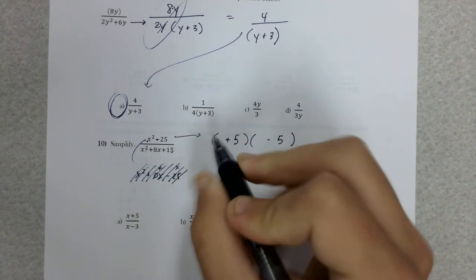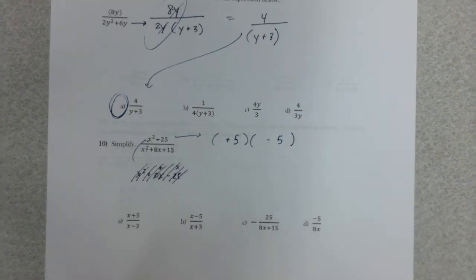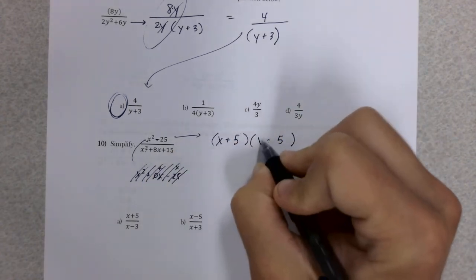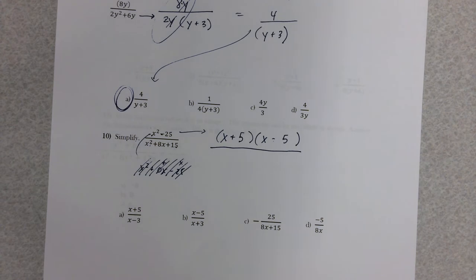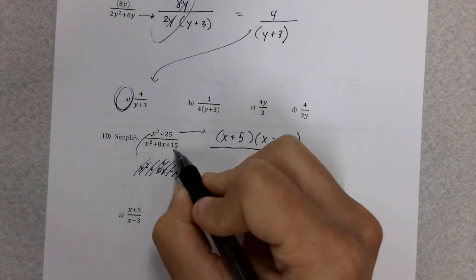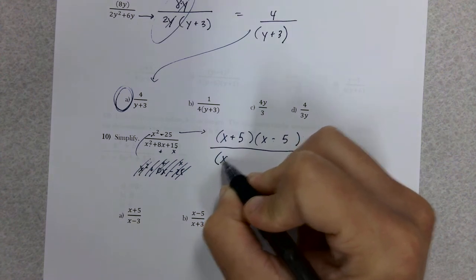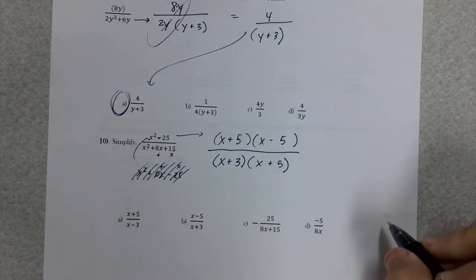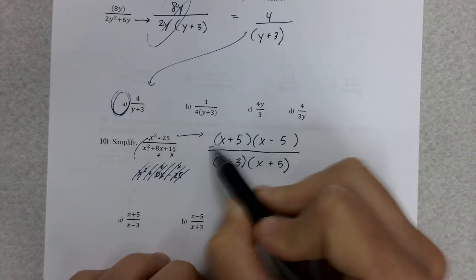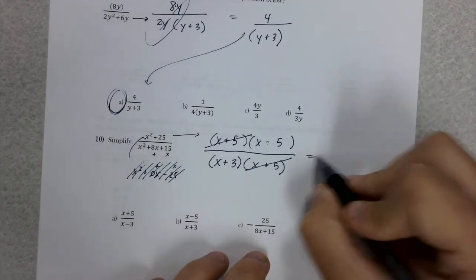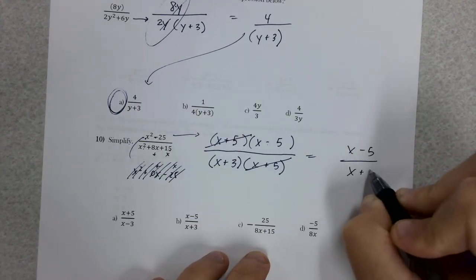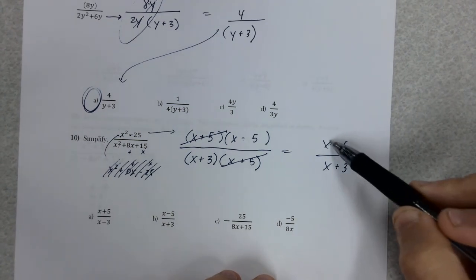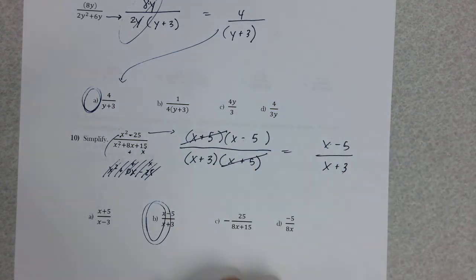Remember the other way to do this was 25 has to be a perfect square, and it is. 5 times 5 is 25. Same thing with x squared. That's where I got the x times x from. The denominator, one of our trinomials. What multiplies to give you 15 and adds to give you 8? I come up with x plus 3 and x plus 5. Now we can cancel common factors. That x plus 5 and that x plus 5 are common factors. Gives me x minus 5 over x plus 3.